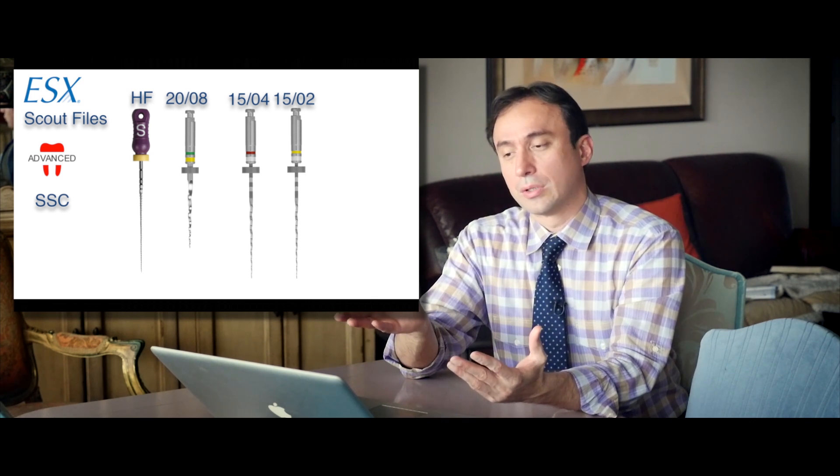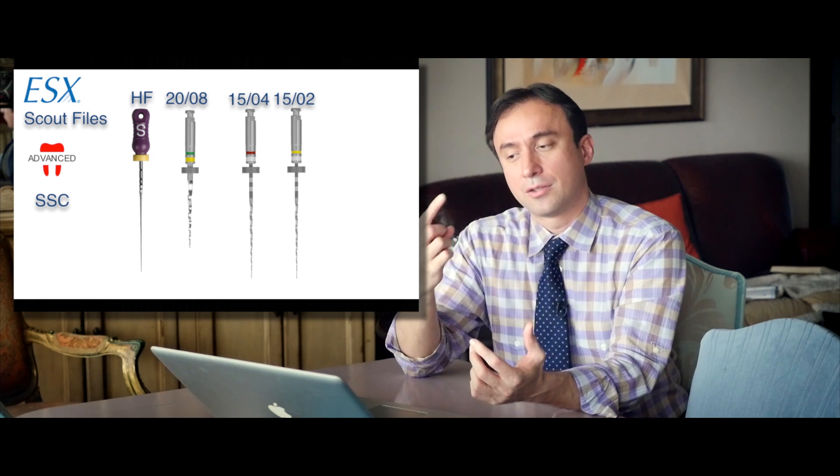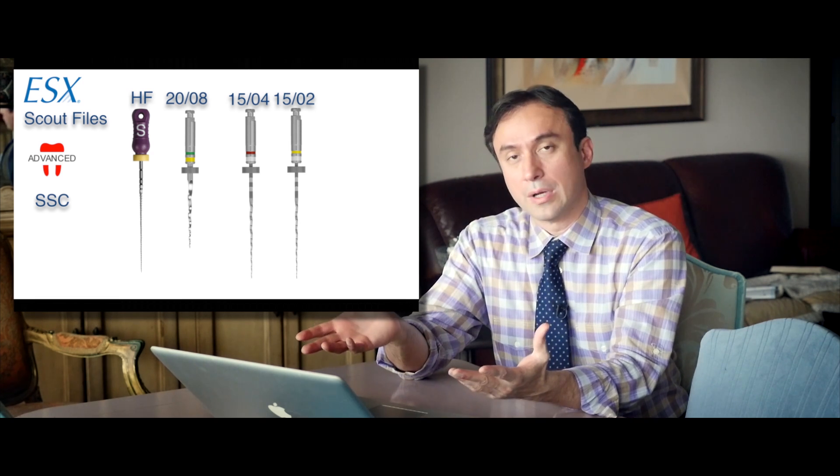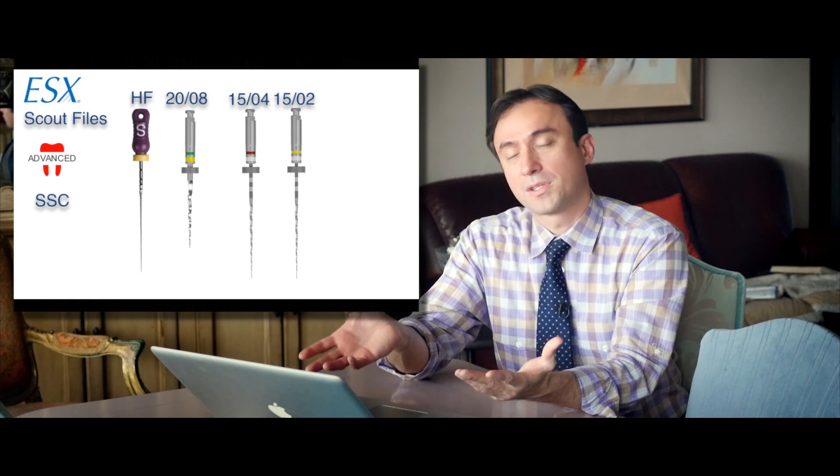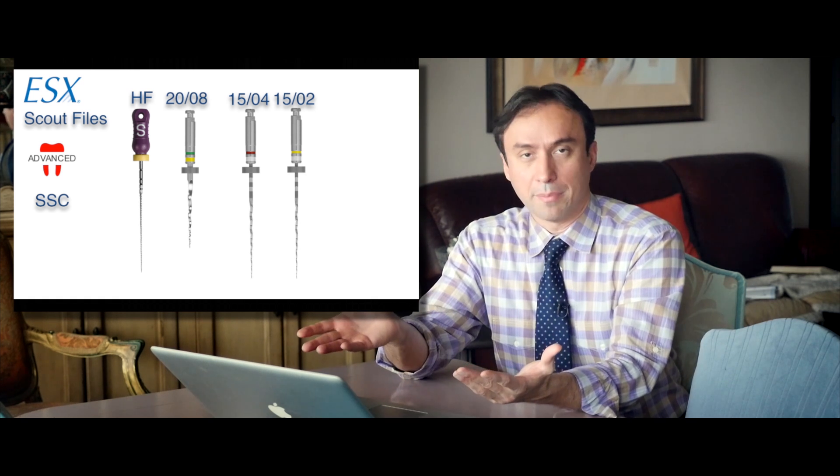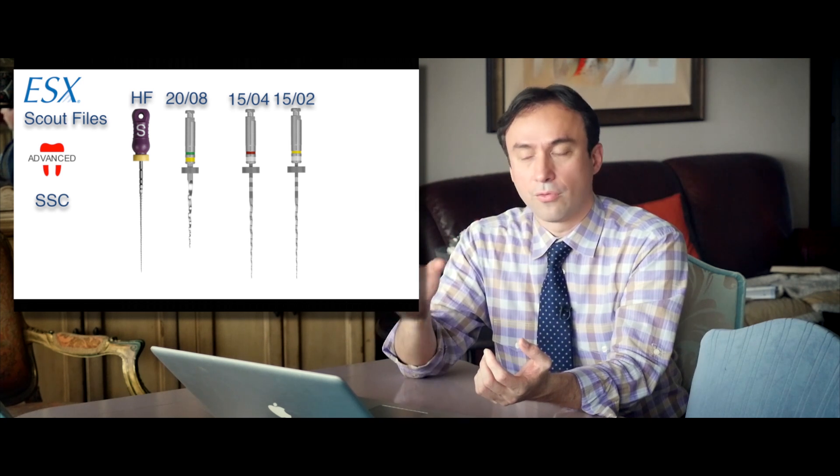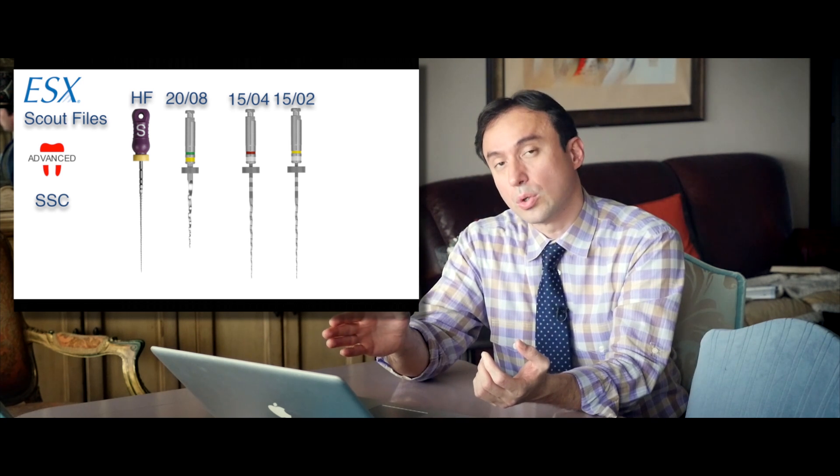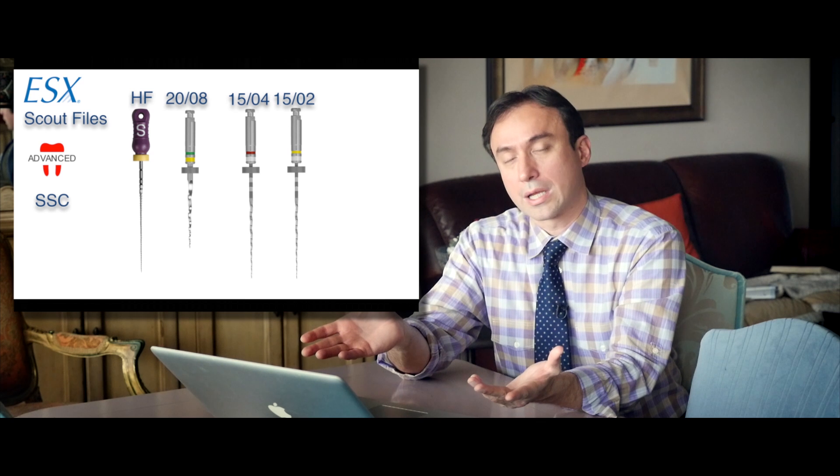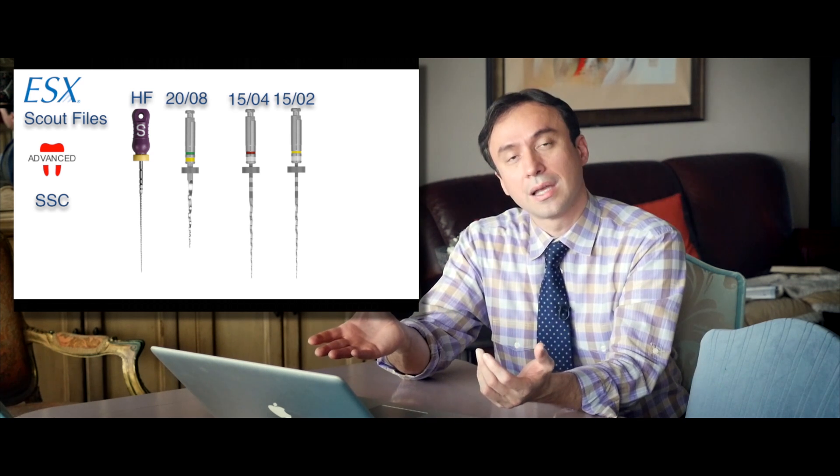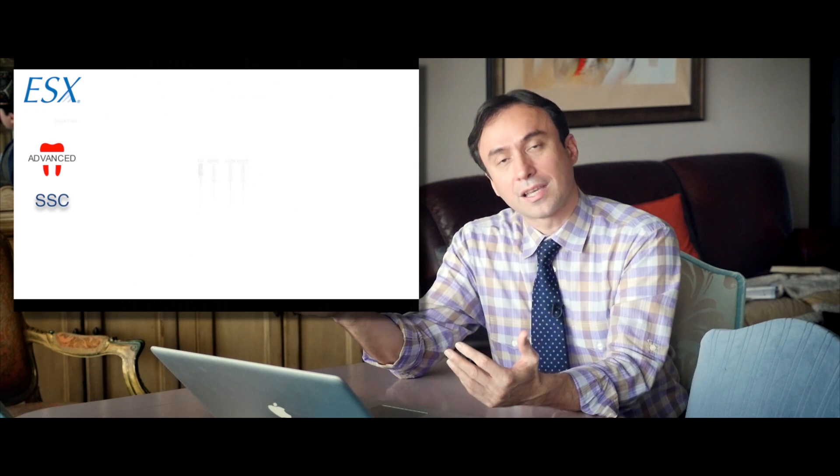So my protocol usually is hand files and a 2008 and then a 1504 and then a 1502 and I'm usually, most of the time, I'm down to the apex already with that protocol using SSC 2008, SSC 1504, SSC 1502 and I can measure my working length at that point. And once the 1502 is down to the apex, now I'm back to the basic protocol.